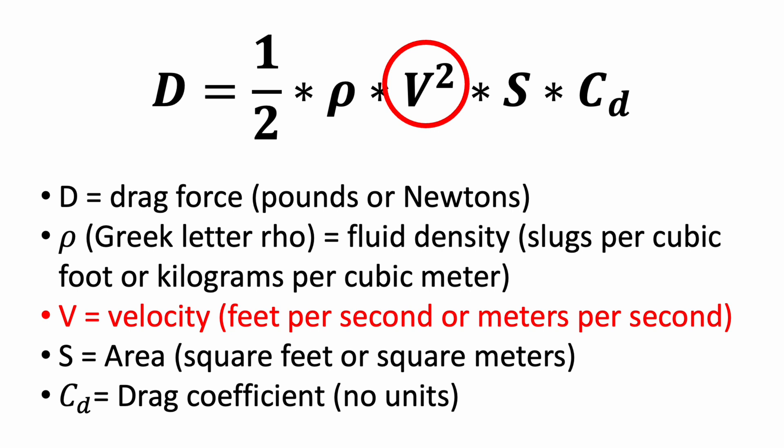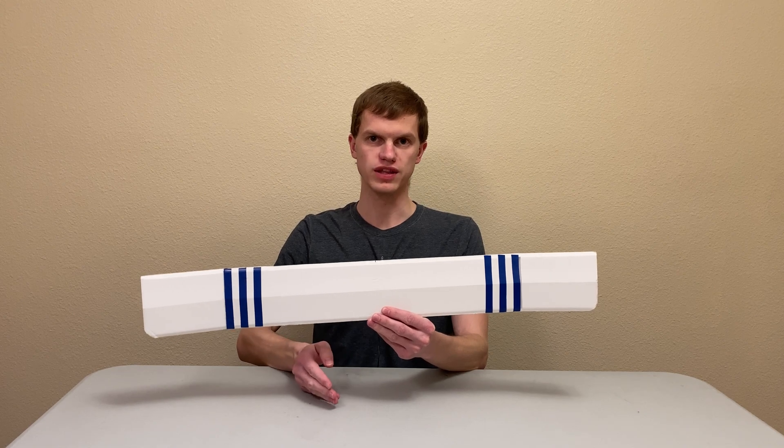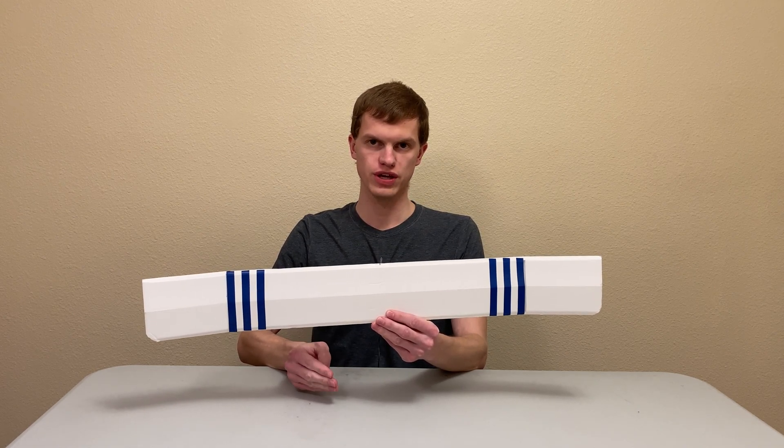The second parameter is the velocity of the object, which is one of the biggest factors because it is squared in the drag equation. This means doubling the speed makes the drag force four times stronger — if you've ridden a bicycle you may have felt the air pushing back harder when riding faster. The third parameter is the area of the object — larger objects have more drag force, similar to how large kites take more strength to run with than small kites.